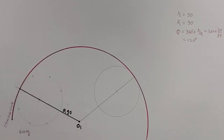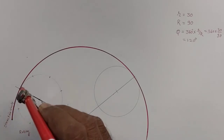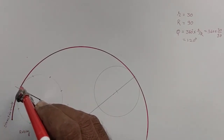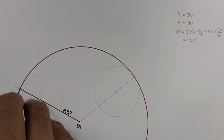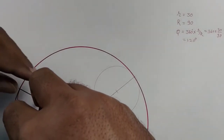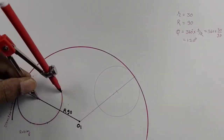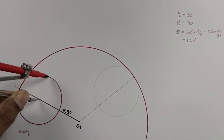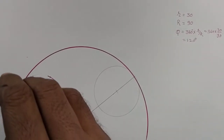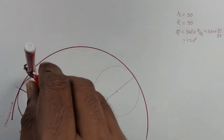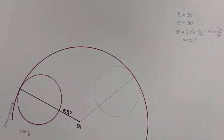First we find out our center. From the center, we create our rolling circle with the 30 mm radius. Then we take the 120 degree angle.